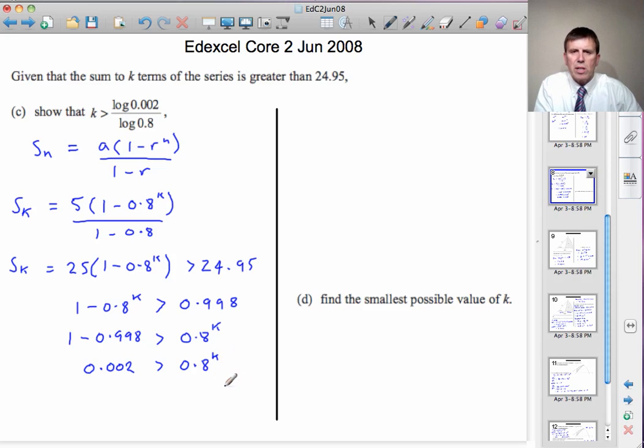So now we have an exponential inequality, and we'll use logs to solve it. Take logs of both sides. The log of the left-hand side is greater than the log of the right-hand side.